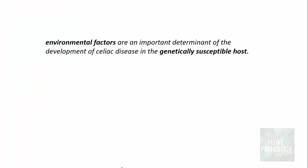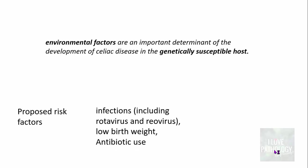Celiac disease occurs in a genetically susceptible host, but apart from genetic susceptibility, environmental factors also play a major role. The proposed environmental risk factors for development of celiac disease include infections such as rotaviral and reoviral infection, low birth weight, and antibiotic use.